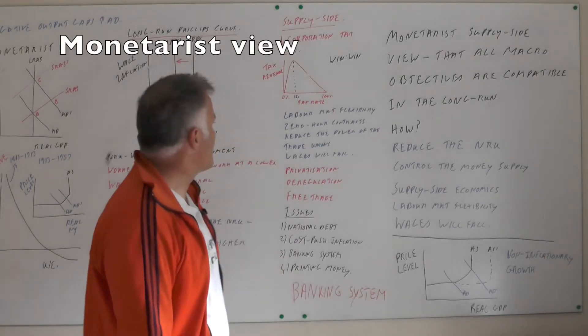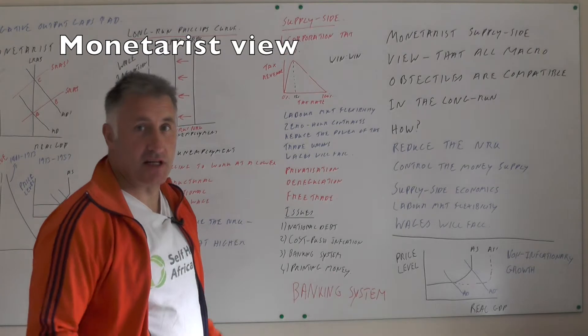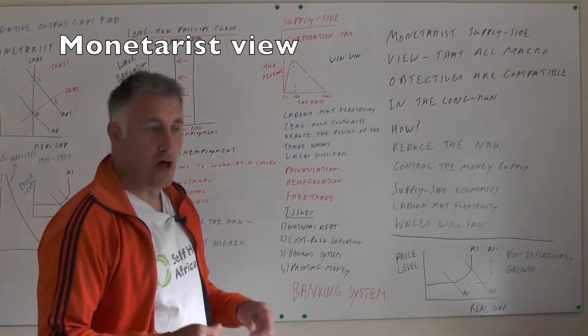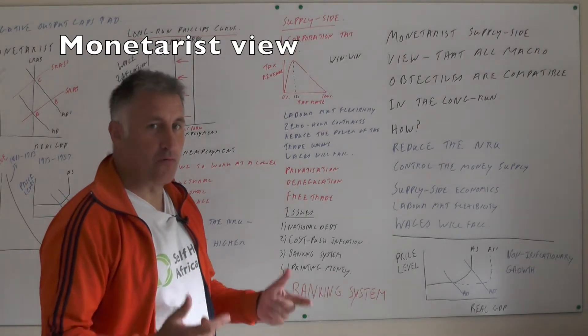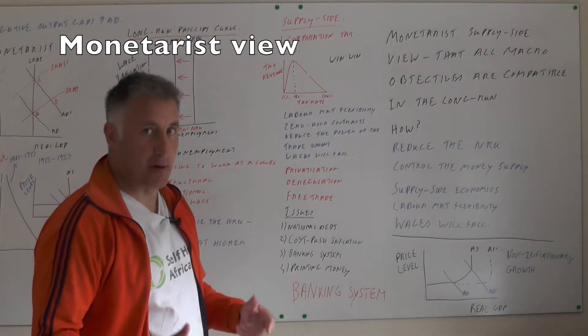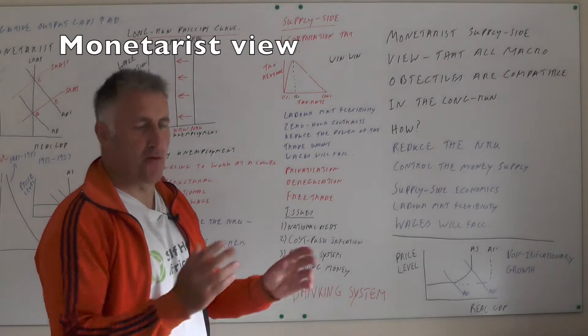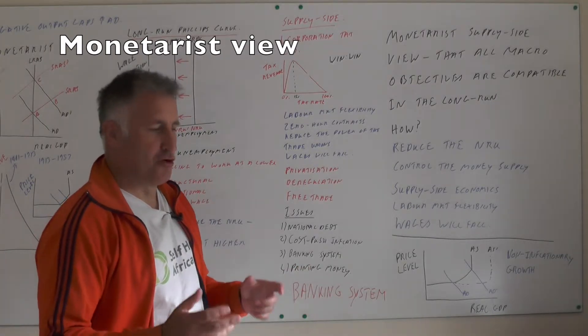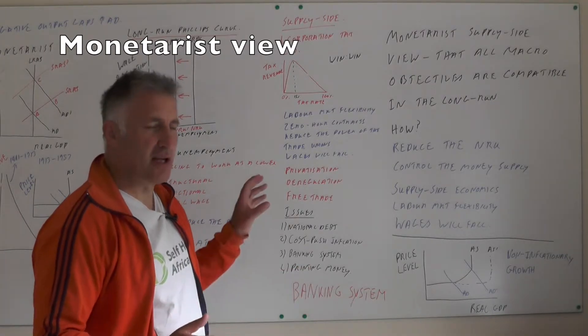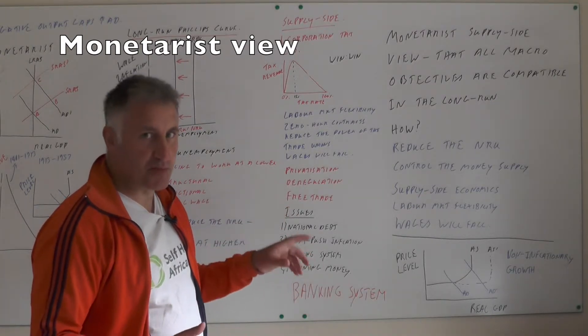Good morning, this is lesson 84 on possible conflicts in terms of macroeconomic policy. In a sense we've already covered this, but we're looking at it a little bit more from a monetarist perspective.